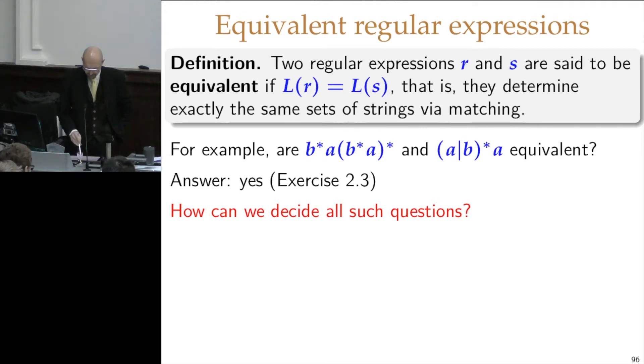And the claim, or the question, is this equivalent to (a|b)*a, meaning any symbol, including nothing, any sequence of the allowed symbols a and b, including the empty one, followed by an a.